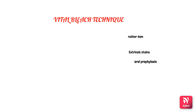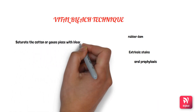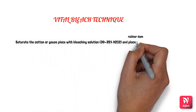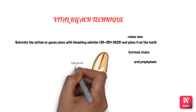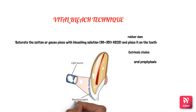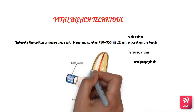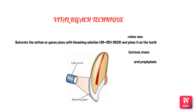The gauze is saturated with a superoxol solution and applied drop by drop from a syringe, taking care not to spill the solution. A special bleaching lamp is placed two feet from the patient's face and left for 20 to 30 minutes. The light and heat from the lamp accelerate the release of nascent oxygen from the superoxol, producing the bleaching effect — hence this method is known as thermocatalytic bleaching. The superoxol must be periodically replenished and the procedure repeated until the desired color is observed.